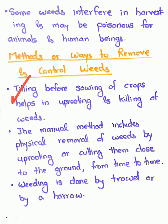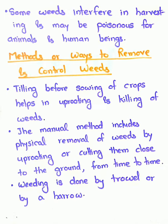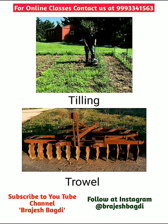The first method of weed control is tilling. Tilling before sowing of crops helps in uprooting and killing of weeds. We have also studied tilling before — it is the first step in agriculture. Tilling helps uproot, cut, or kill weeds before the crop is sown. You can see the figure here — this is a tilling machine, a small machine used in gardens or small fields.